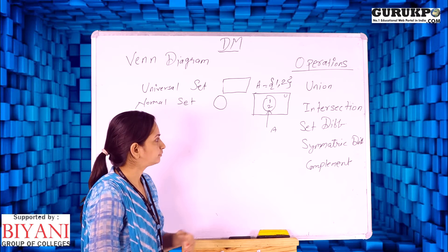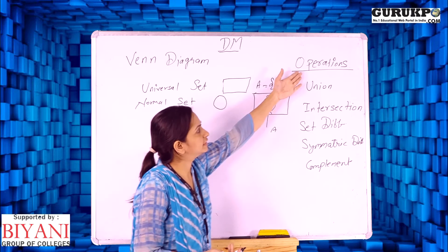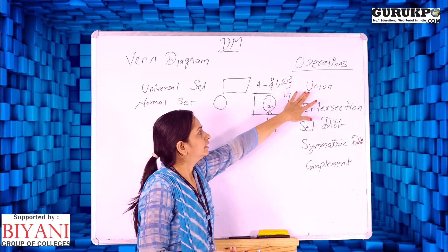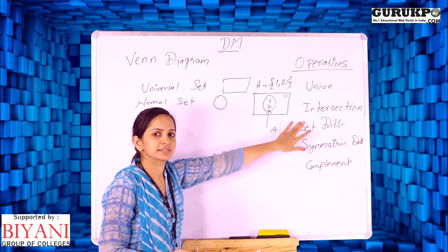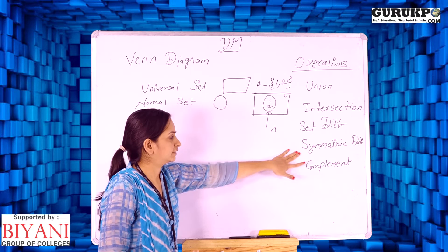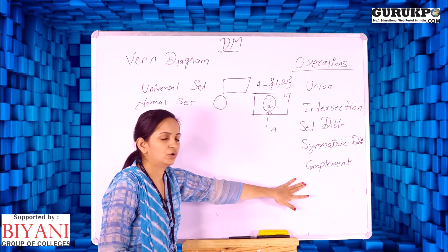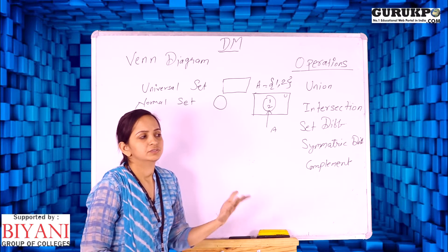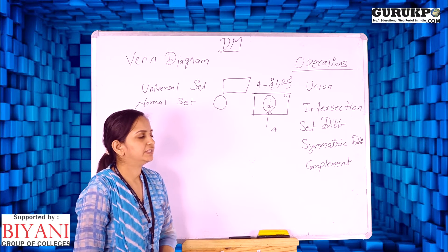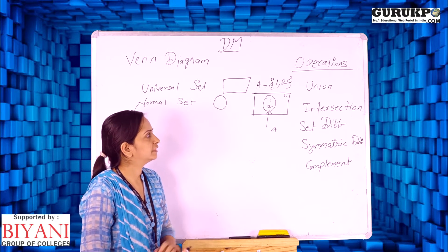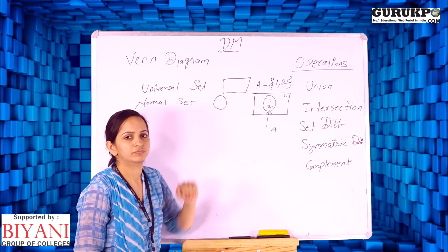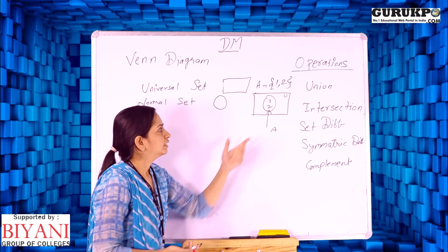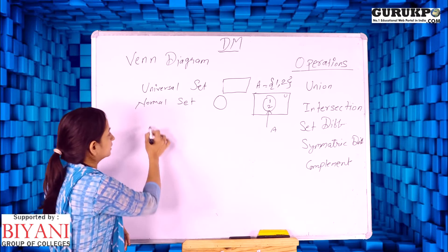We have studied the operations on sets: union, intersection, set difference, symmetric difference, and complement. One by one, we can also represent these operations with the help of Venn diagrams. So let us take an example.